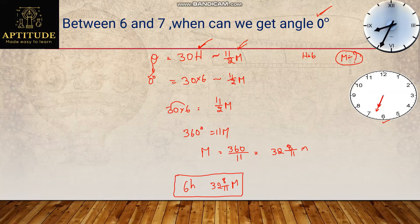The formula is exactly the same for every type of problem, but the way of thinking is different. They're asking between what time — so I need to find minutes. Theta is 0 here, but sometimes they'll give 180 degrees, 90 degrees, or 60 degrees. Everything is the same — just modify the formula according to the given question.